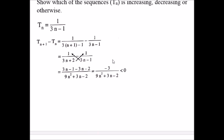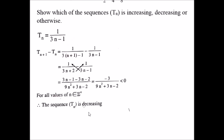We need to check if this amount is positive or negative. The numerator is -3, which is negative. The denominator: since n is a positive integer, 9n² + 3n is always greater than 2, so the denominator is positive. With a negative numerator and positive denominator, the fraction is negative — less than zero. Therefore, the difference T(n+1) - T(n) is negative and the sequence is decreasing.